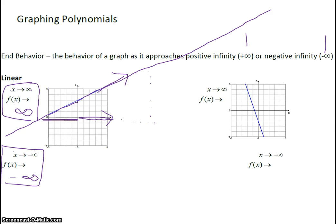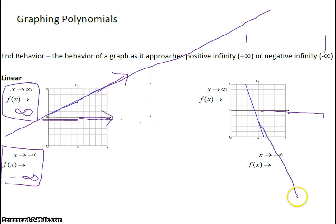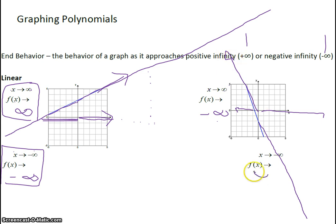For a linear function with a negative slope: as x approaches infinity, so as our x's get bigger, our function goes down towards negative infinity. As x approaches negative infinity, our function goes up towards positive infinity.